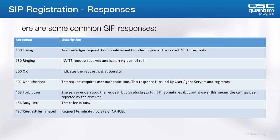Here are some more common responses. A 100 Trying acknowledges a call phone request and indicates that the server is processing the request — the client will send the INVITE and the server will respond with a Trying. A 200 OK indicates a successful registration when you make the call. A 401 Unauthorized seems like it would be an error, but that is actually just part of the SIP protocol. 500-series messages represent a failure of some kind — normally those failures would be on the server side. For example, when you see several 503 errors in Cisco Call Manager, this usually means that something isn't set up properly.